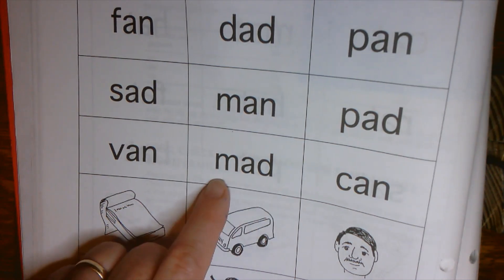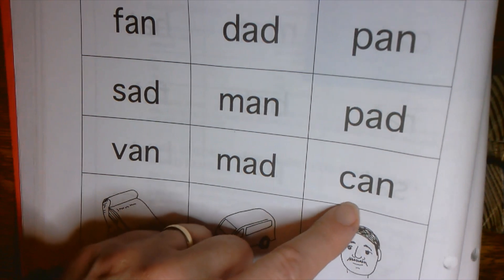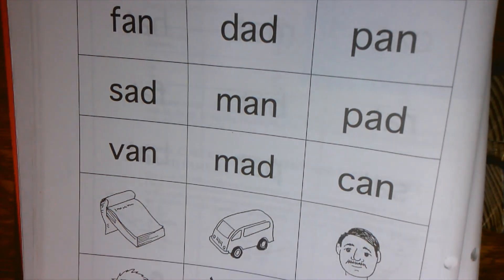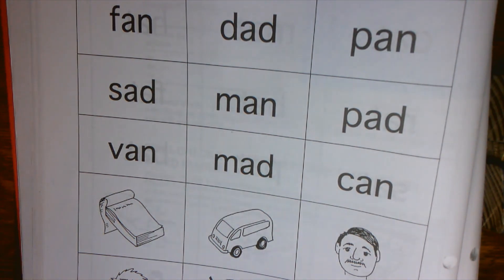MAD. MAD, you have someone who looks angry. K, AN, CAN. And you have something that looks like a CAN that food might come in.